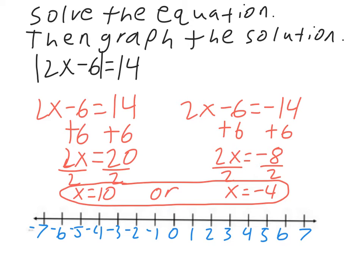Then we graph it. One issue is our number line only goes up to 7 and we want to graph 10, so we extend the line and add 8, 9, 10. Then we plot our two points at 10 and negative 4. The equation is solved and we got two answers: 10 and negative 4.